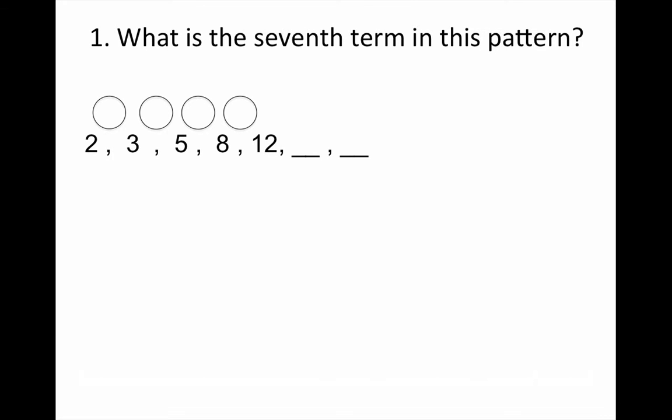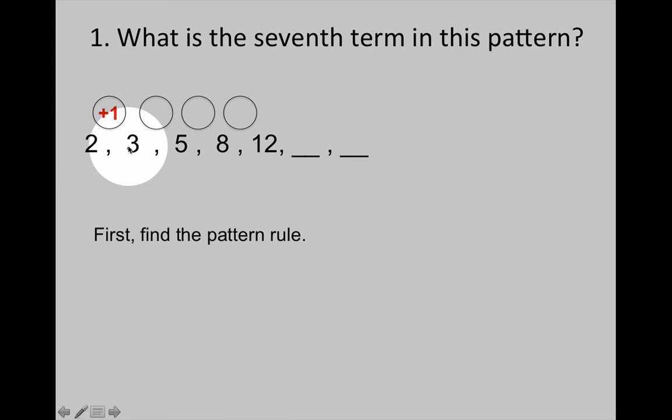What is the seventh term in this pattern? First, find the pattern rule. Let's look at the gap between the numbers. From 2 to 3, the gap goes up by 1. From 3 to 5, there's an increase of 2.